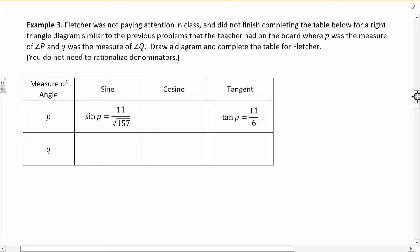Fletcher was not paying attention to class. Fletcher was not paying attention to class. And he didn't finish writing the table for the right triangle diagram. Uh-oh. And he's got P and Q when they're in a right triangle. We have to now use this chart to create a diagram. Well, we can do that. So it's got P and Q here. And it says P is the measure of angle P. So that's going to be this guy here. How do you know that P is not the right angle? Well, because when we do SOHCAHTOA, you always do SOHCAHTOA on the acute angles, not on the right angle.